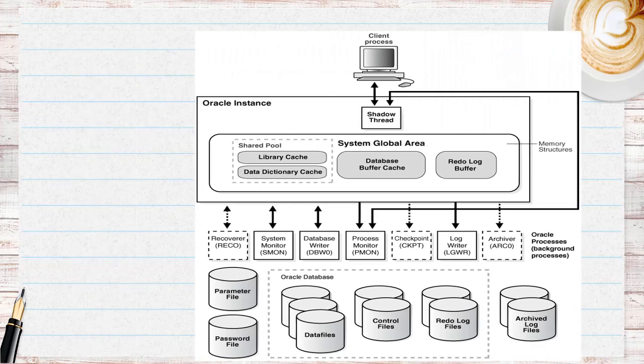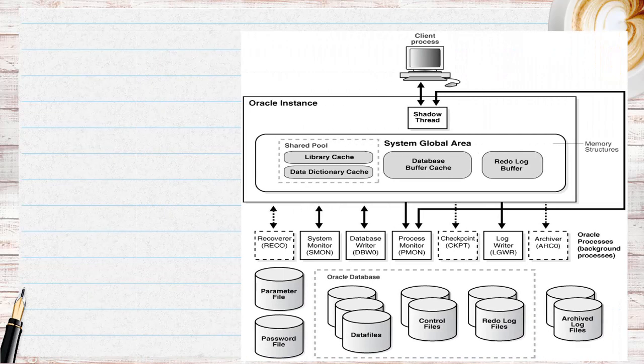Let's get back to the Oracle architecture. Whenever there is a transaction on the database, the transaction gets updated on the redo log buffer, which gets written to the redo log files by the log writer process. The value of the transaction is kept at the undo segments on the undo tablespace. Let's look at the content of the redo log first.